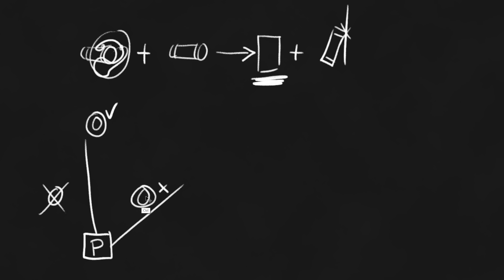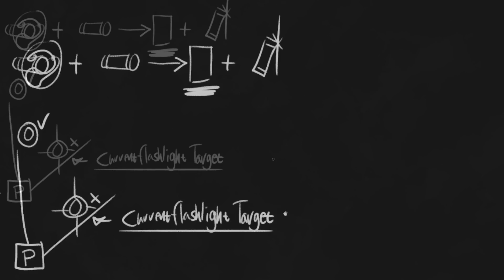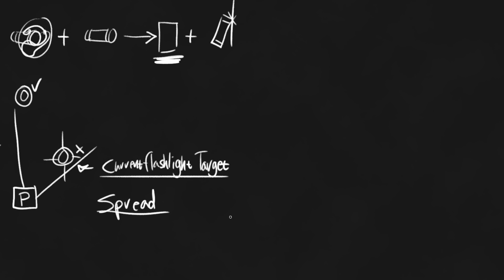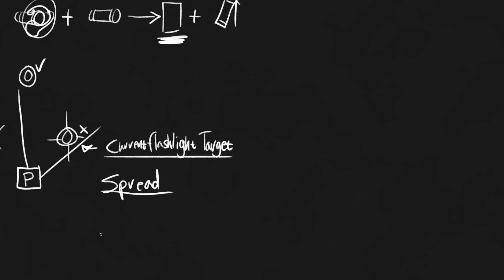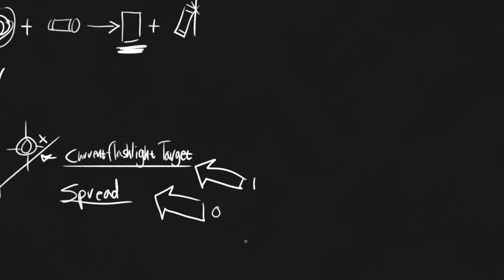Once we have a valid target, all we have to do is go ahead and cache that node for a period of time, and that will be our current flashlight target. We do need to get our spread, and the spread is going to be calculated exactly like it is for the right hand. Then we're just going to cache it and use that later to blend in and out of the targeting system. Once we have the spread, we now need a weight — how much we're looking at the target versus how much we're defaulting to the normal spread, with one being the target and zero just being normal animation.